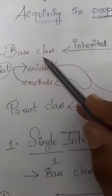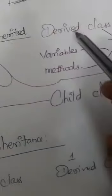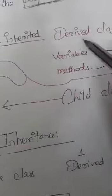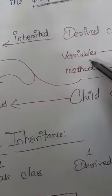A base class may contain variables and methods. A derived class may also contain variables and methods.